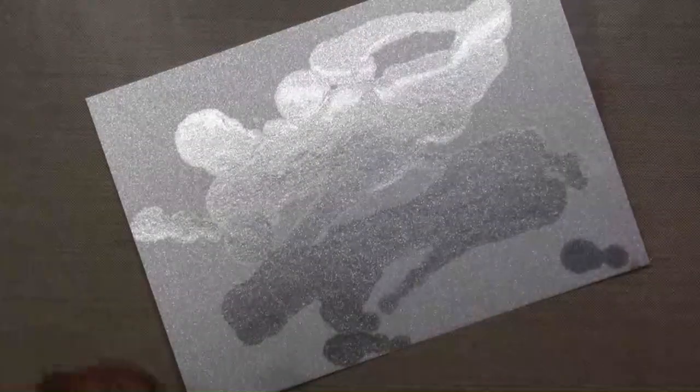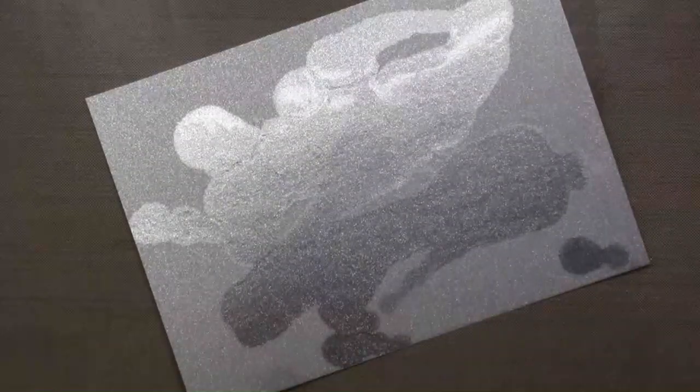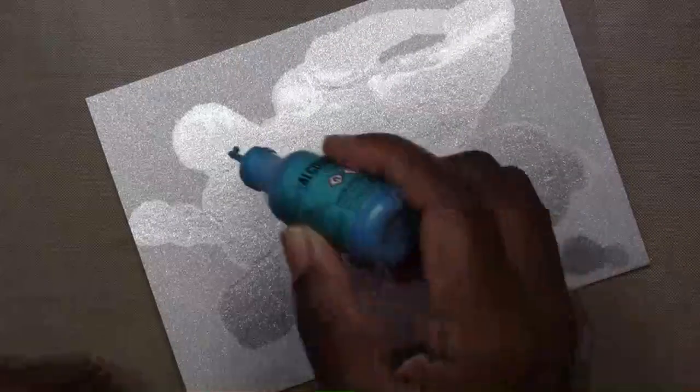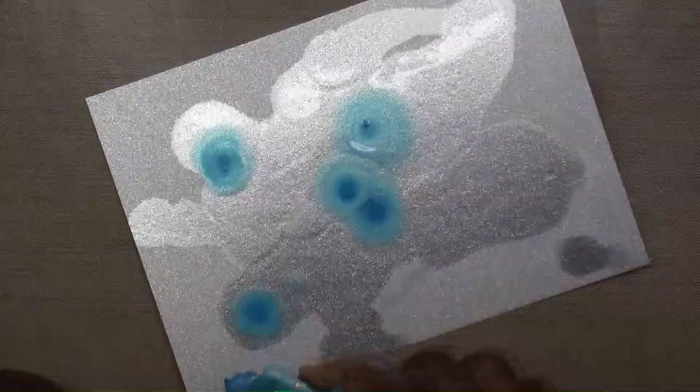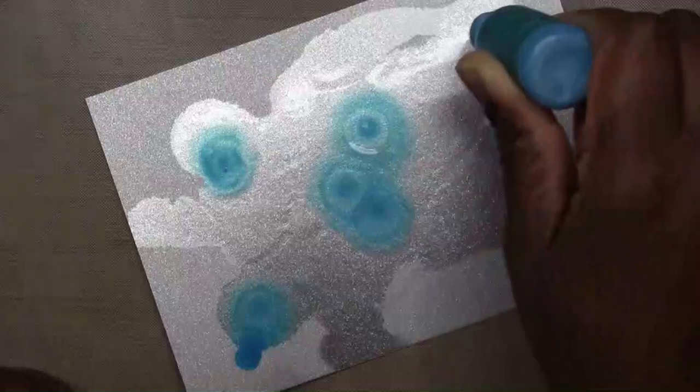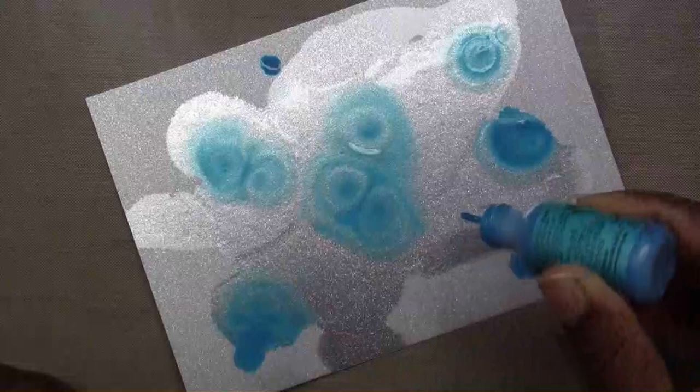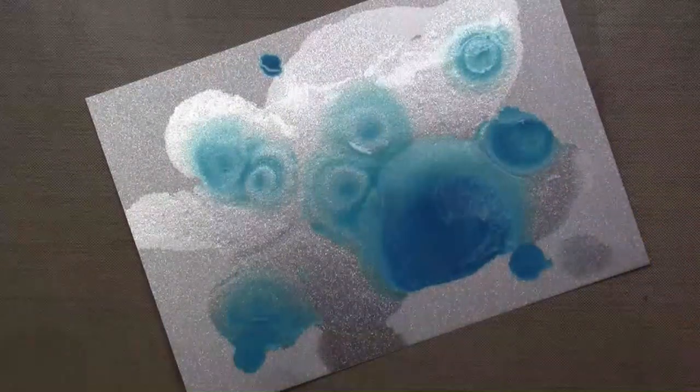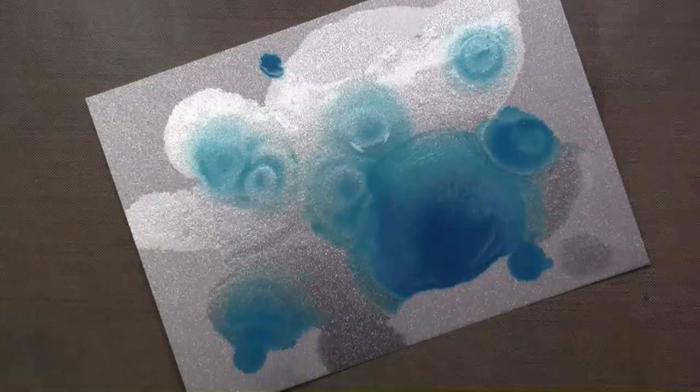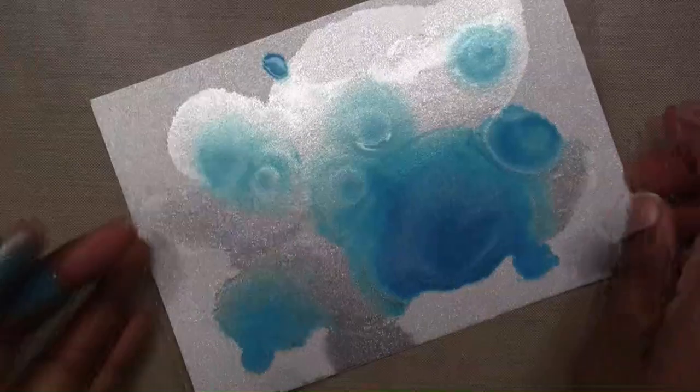I first started off by just laying down or dropping in some of the blending solution, and then I'm going in with the color Tranquil. I'm just randomly dropping drops in, basically playing around with this ink, using the alcohol blending solution to just move it around.